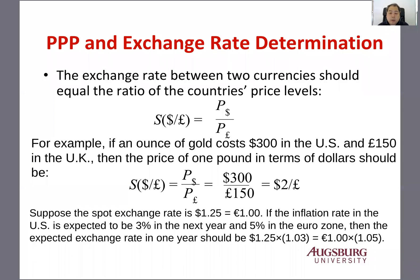Purchasing Power Parity basically tells us that the purchasing power and the price level actually determines the exchange rate. So if I can buy a Big Mac in the United States, then I need to have the same value of a Big Mac in London. The exchange rate between two currencies should be equal to the ratio of the countries' price levels.